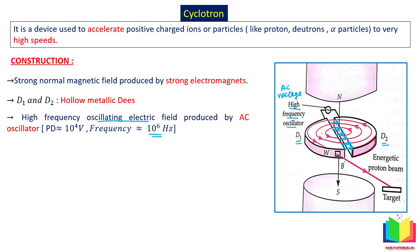Because of the AC voltage, in the first cycle one D will be positive and the other will be negative. In the second cycle, the polarity reverses. So the polarity of the D's keeps changing with the AC voltage. When one D is positive and the other negative, the electric field direction in the gap is in one direction; then it reverses. So the direction of electric field in the center between the D's keeps changing with the AC voltage.